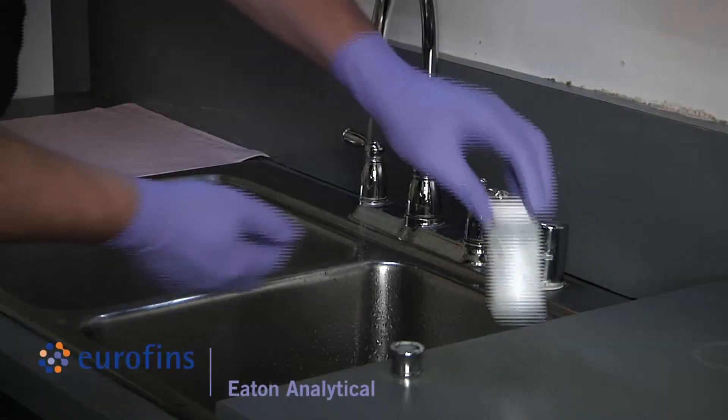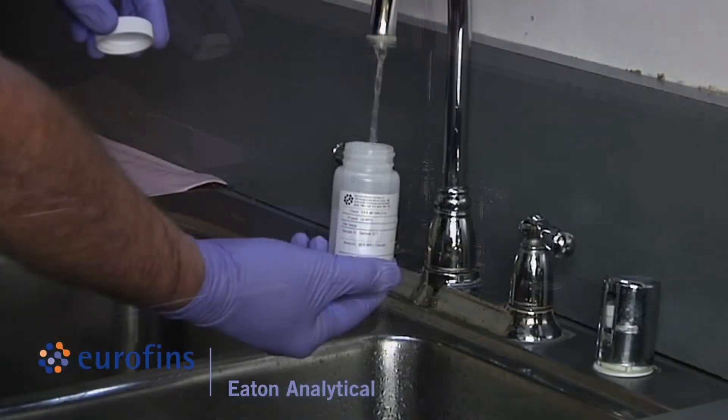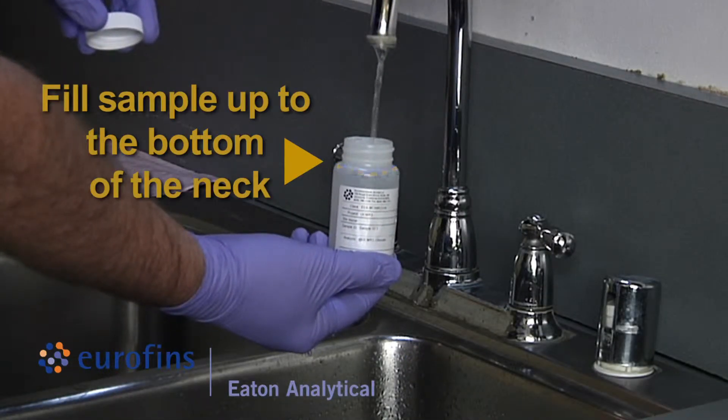Start sample collection by filling the sample bottle up to the bottom of the neck, taking care not to flush out preservatives and making sure the mouth of the bottle does not come in contact with anything other than sample water.